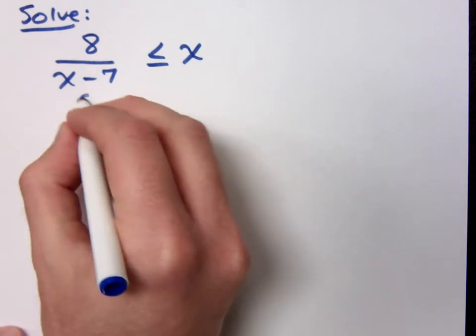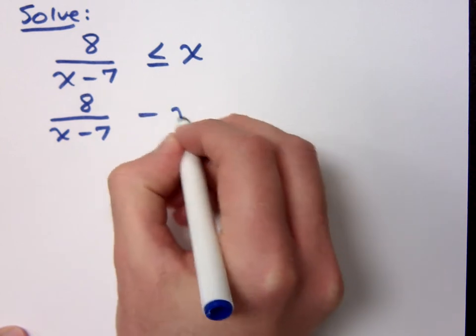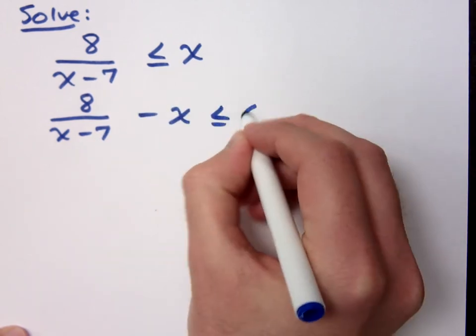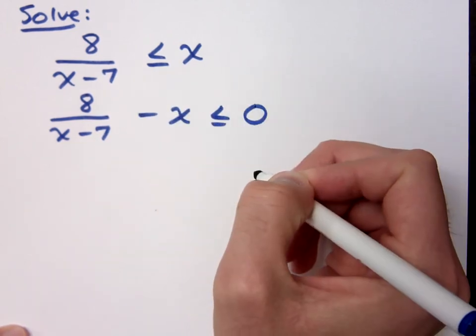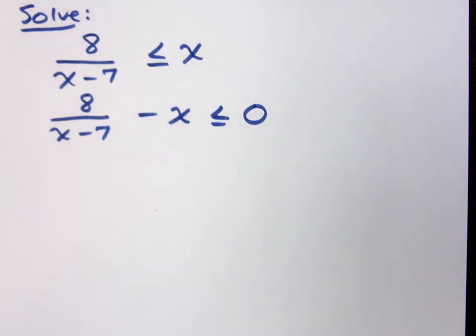So the easiest way to do this one is, of course, just to move the x to the left. Do you all agree with that? Is that okay? Notice all I did was use the addition property of inequality. Just move terms from one side to the other. That's fine.